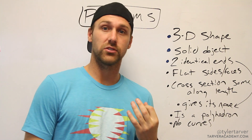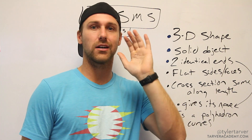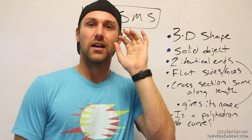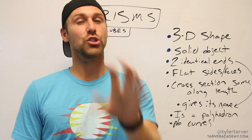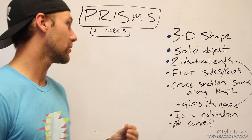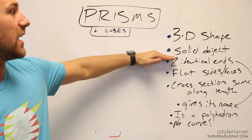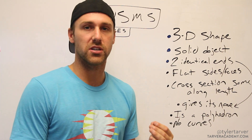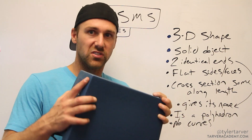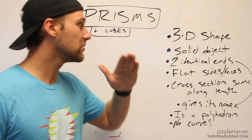Properties of prisms: prisms are three-dimensional shapes. It's not going to be flat — it's not going to be like a square, rectangle, or triangle. It incorporates those shapes, but it is a three-dimensional shape. It is also a solid object, meaning it's not theoretical — it's solid.